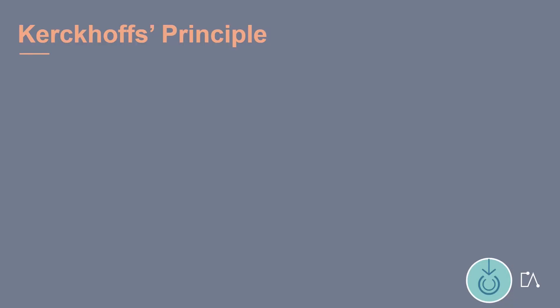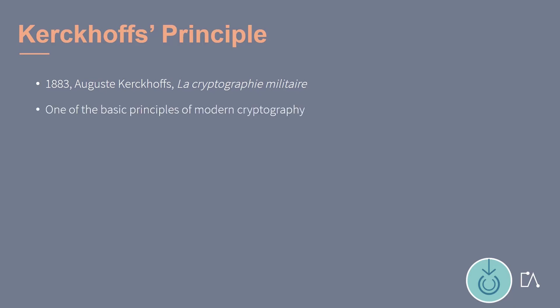When talking about the security of a crypto system, Kirchhoff's Principle is of main importance. In 1883, August Kirchhoff published his thoughts on possible ways to construct a secure crypto system. In total, he published six basic principles, of which the second one is known nowadays as Kirchhoff's Principle.